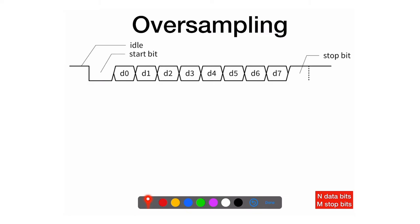The receiver constantly polls the wire it's monitoring — always reading it to check whether it's still idle or whether it has gone low. The rate at which it samples is called oversampling, because it samples at 16 times the baud rate. So if the baud rate is 9600 bits per second, the receiver polls at 16 × 9600.